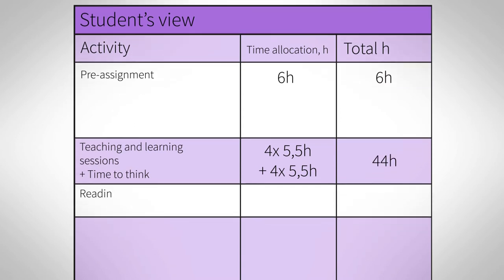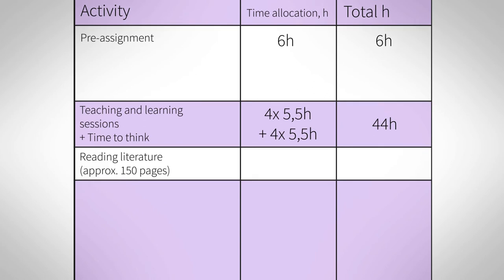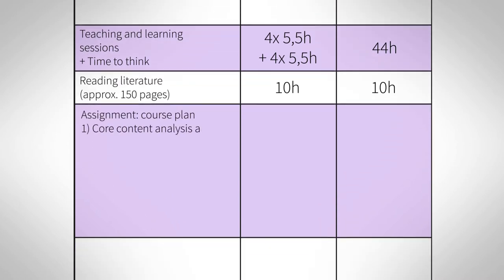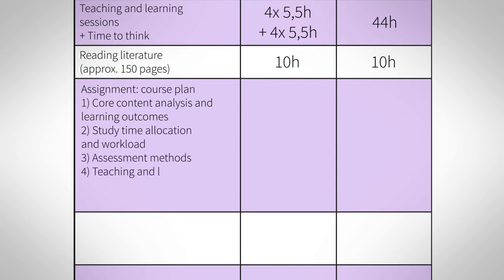The course includes reading the literature, approximately 150 pages in the student's mother tongue. This equals 10 hours according to the time allocation model. It is also in line with previously collected student feedback. The course assignment is done during the course as a process, one step at a time. According to previous experience, six hours is quite sufficient for most students per one step. A total of 30 hours is reserved for the assignment. Time to think is calculated in these hours.